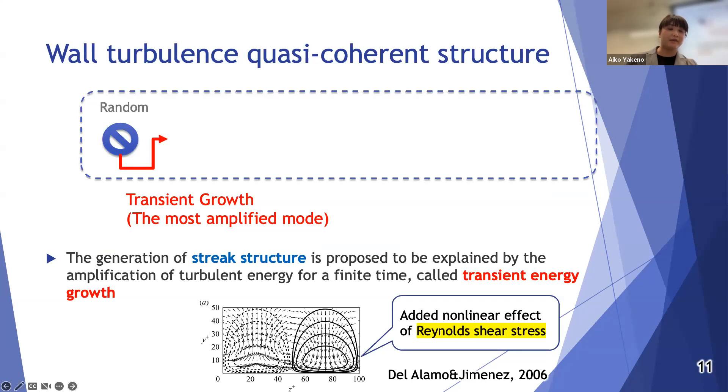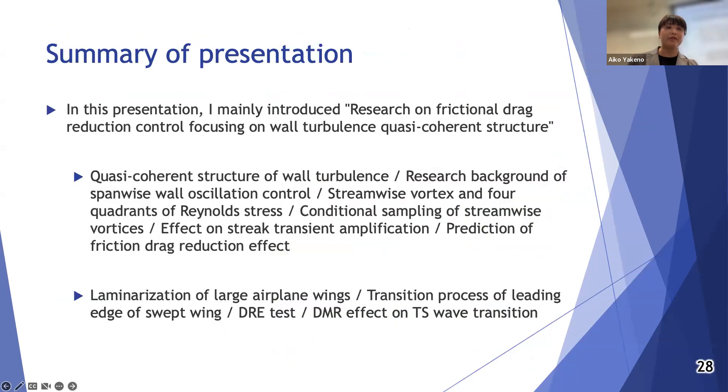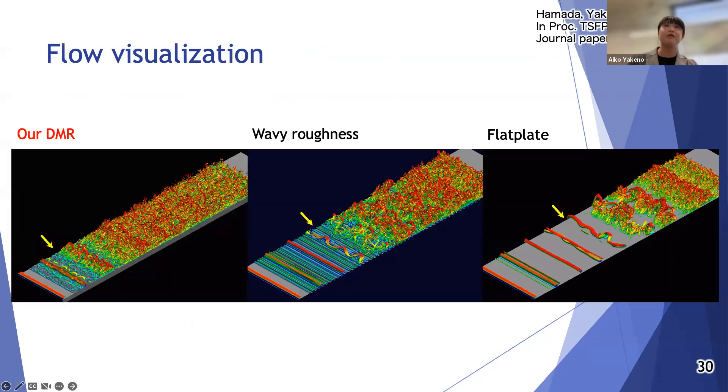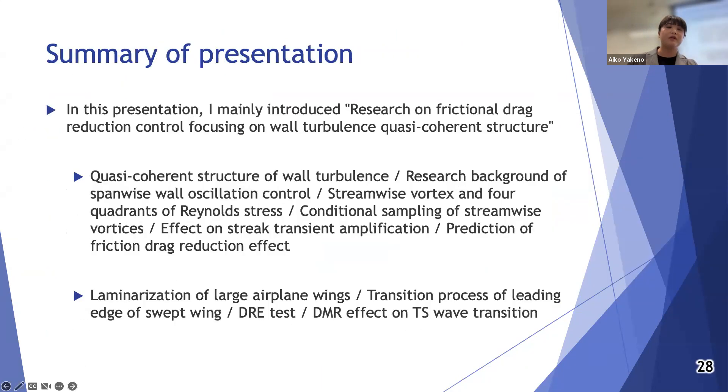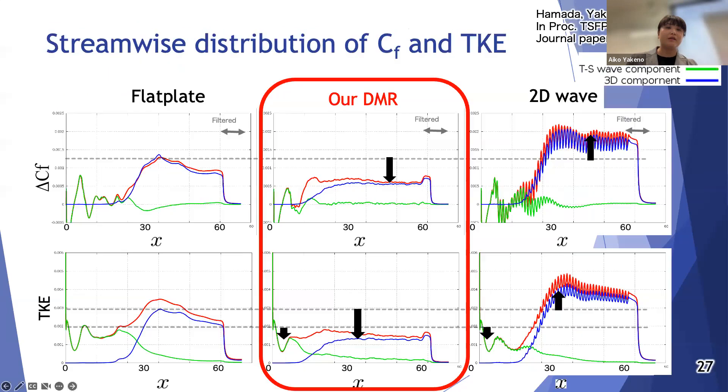The transition causes an earlier transition of the boundary layer, but then when the boundary layer transitions, it has lower torque. Yeah. It has some lower torque, lower Reynolds shear stress like this.